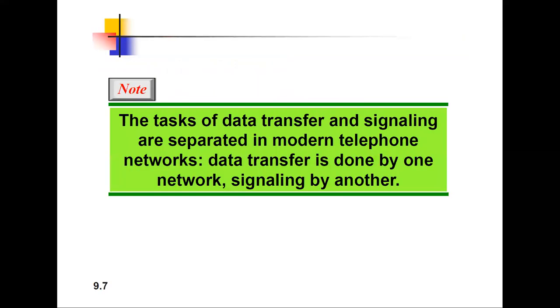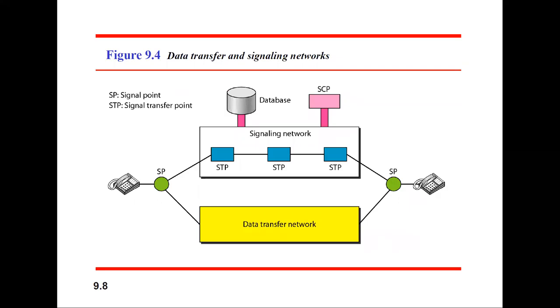The tasks of data transfer and signaling are separated in modern telephone networks. Data transfer is done by one network, signaling by another. This picture shows the data transfer network and how two telephones are connected to each other. The signaling networks, denoted in blue, show how they transmit signals between two telephones.